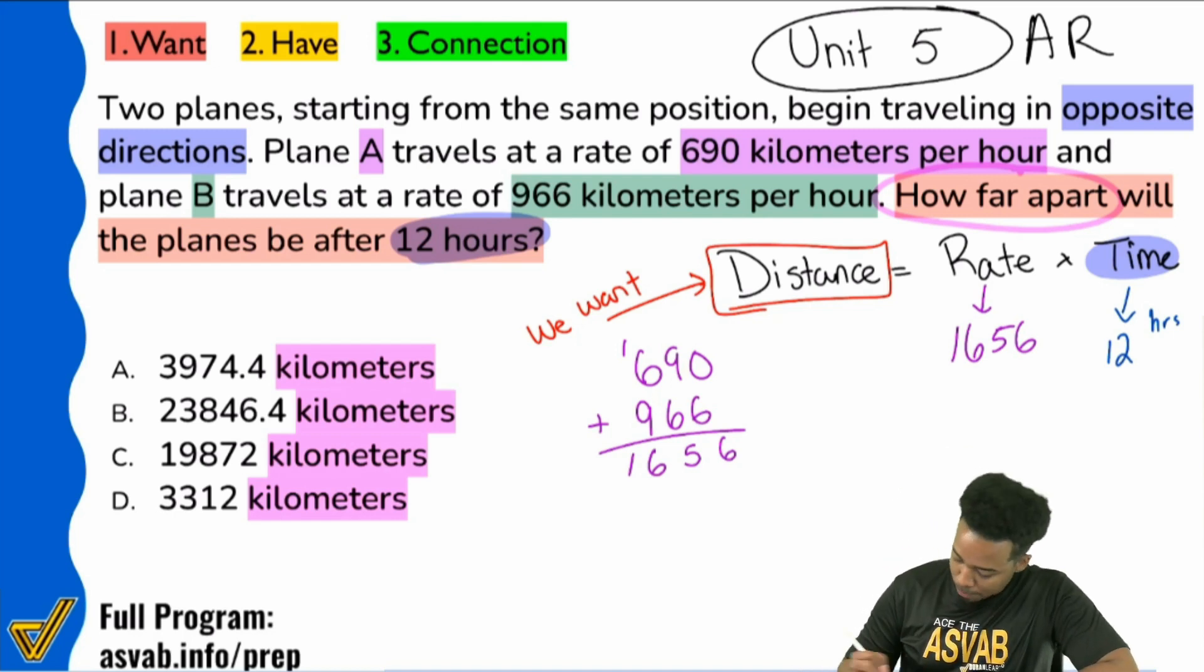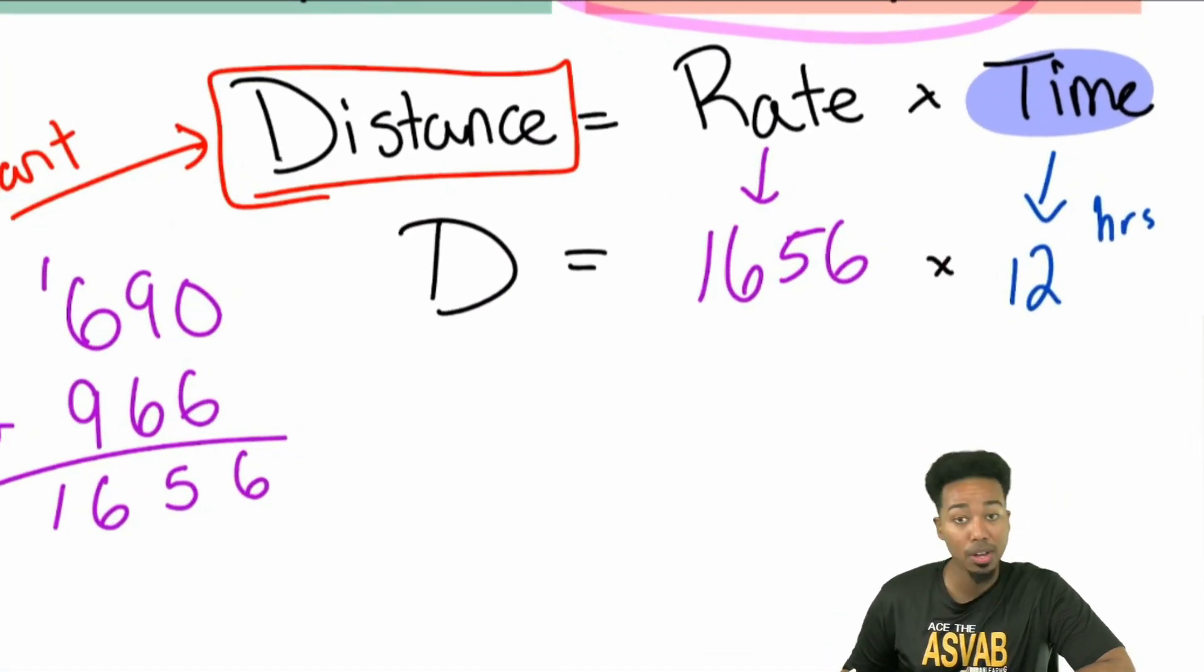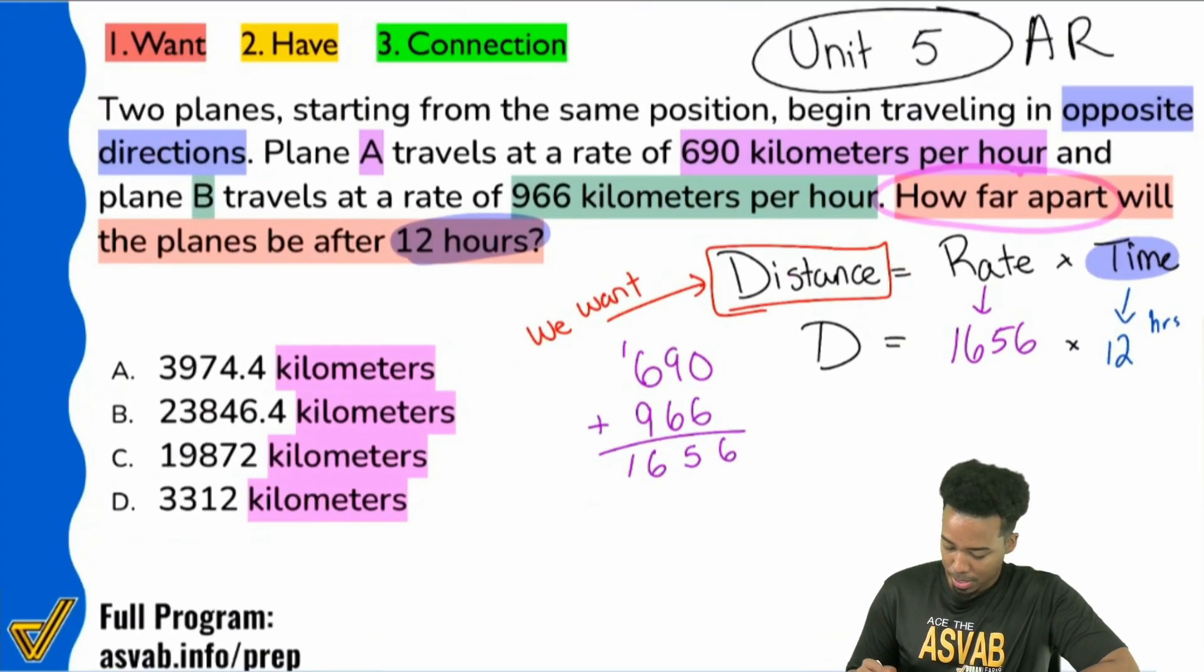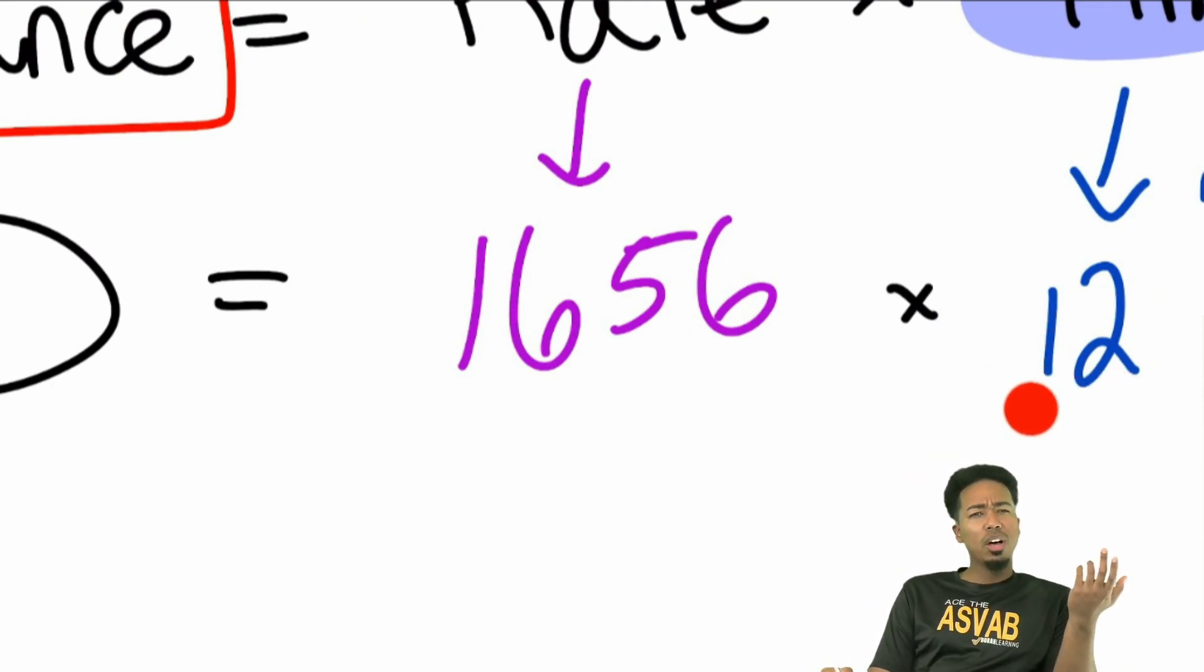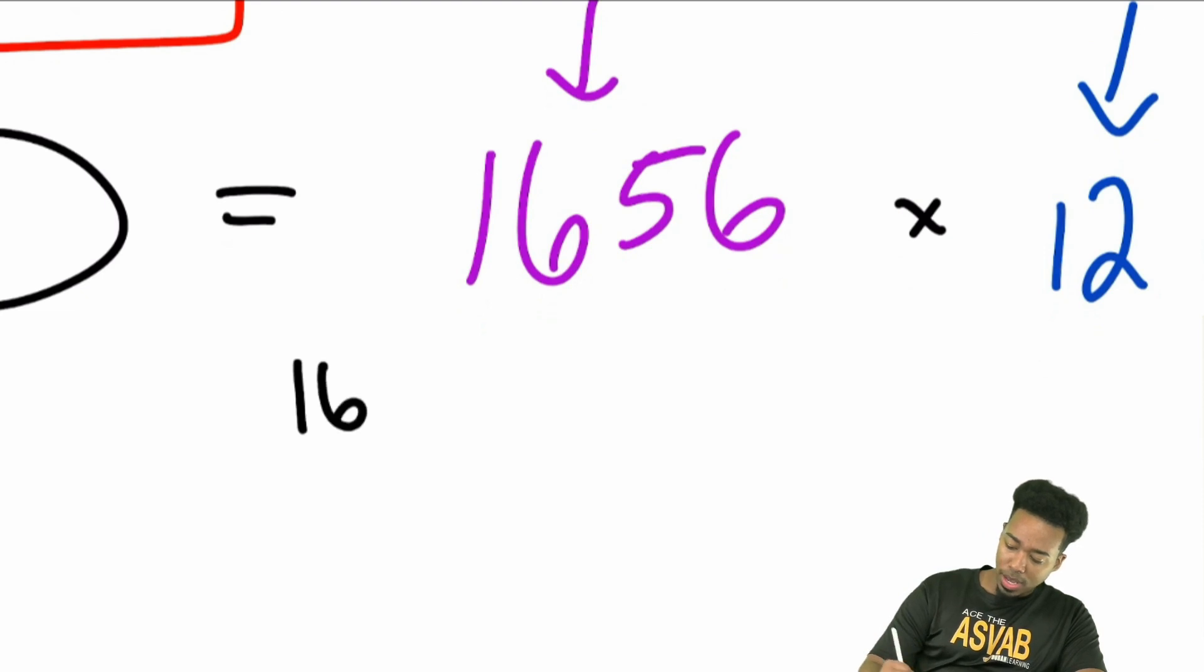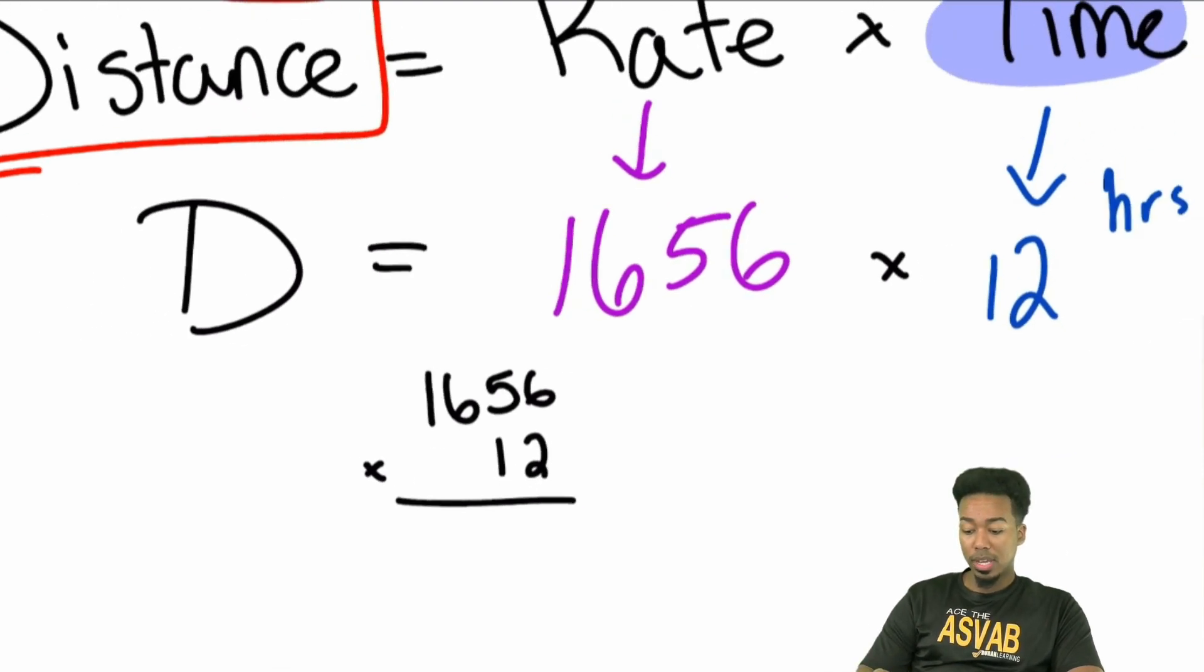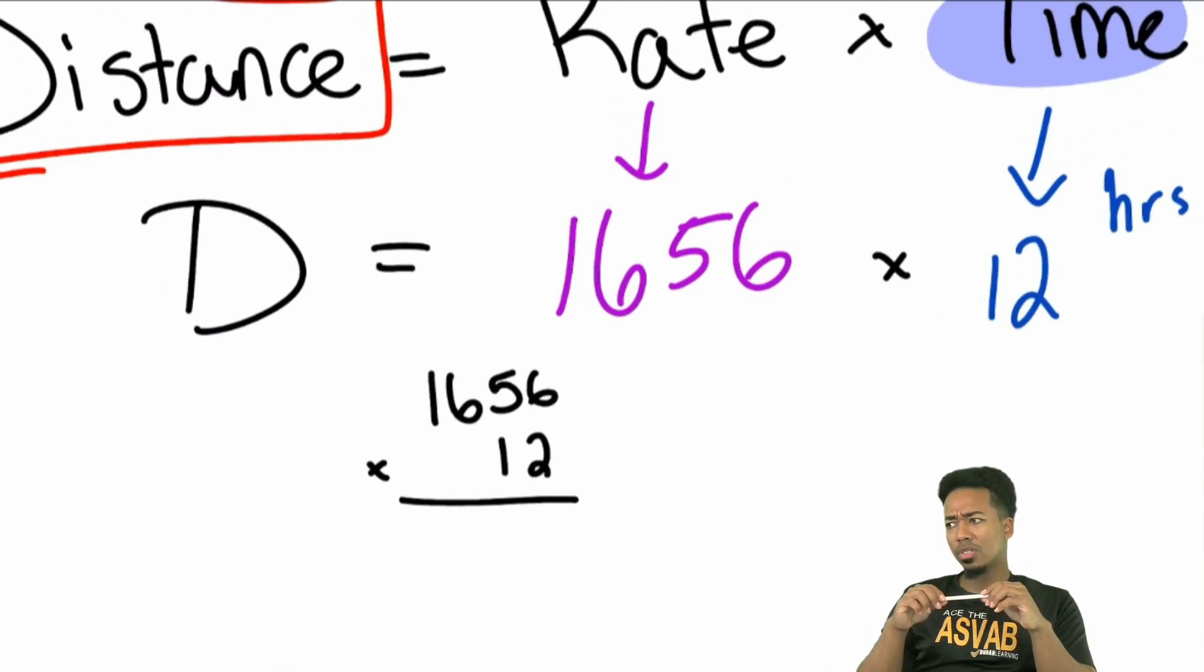So with that said, boom, we're good. We're trying to find that distance. We're doing 1656 times 12. And you can actually kind of guesstimate if you want to, because everybody, if you're doing a big number like that times 12, think about it. Is 12 a little more than 10? It is, right? So why would I waste time? If this is the ASVAB, think about it. Why would I go ahead and set this up when I know that multiplying by 12 is just like multiplying by 10, then adding on two more of those numbers.